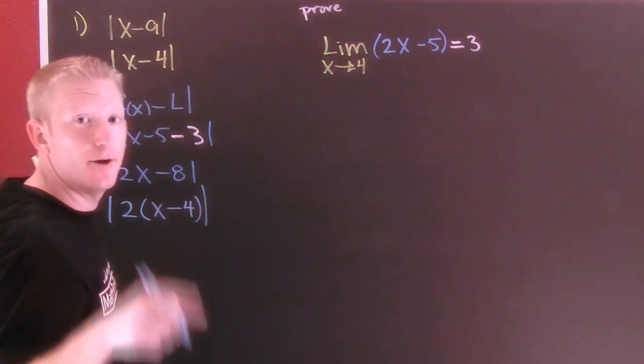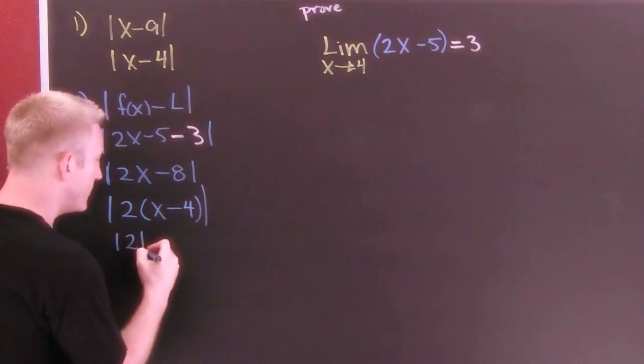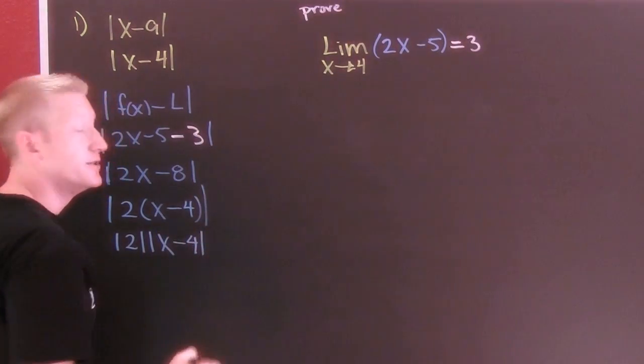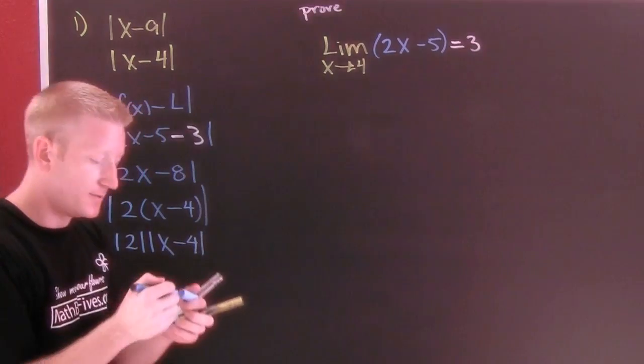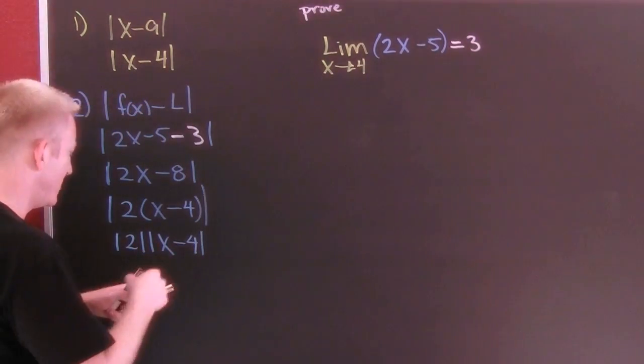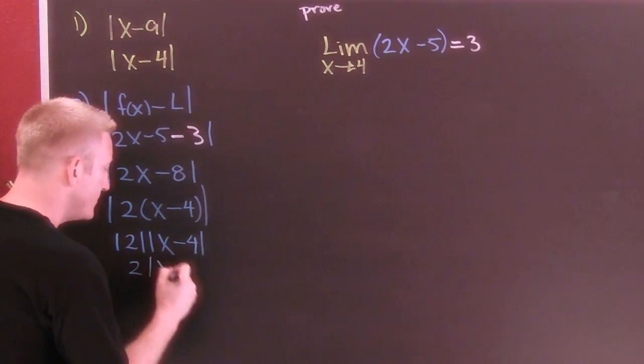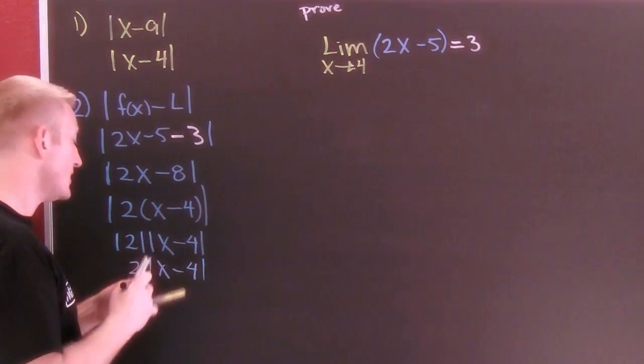Now the absolute value of a product is the product of the absolute values, and I can write the absolute value of 2 times the absolute value of x minus 4. Sure, finish him. We have just gotten that part where we got what we were looking for times some number. Clean that up. The absolute value of 2 is 2 times x minus 4.